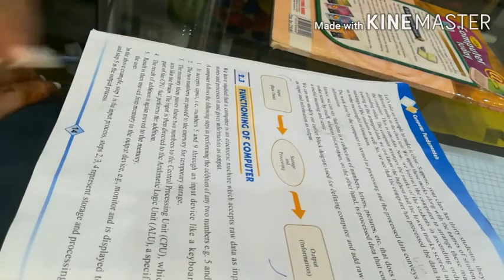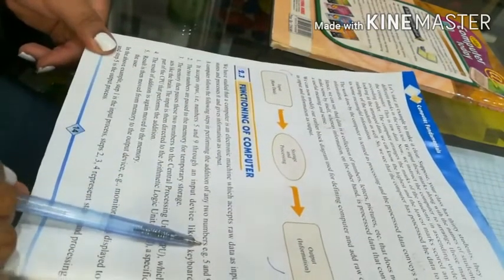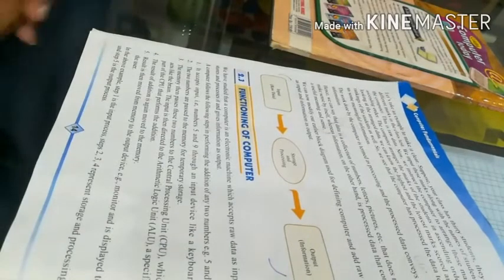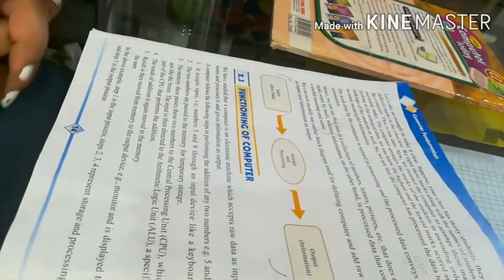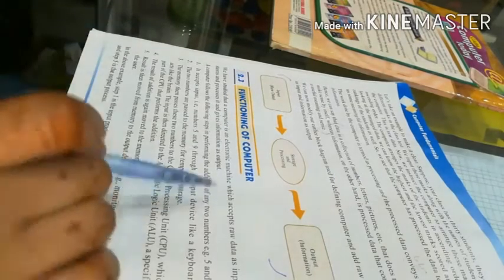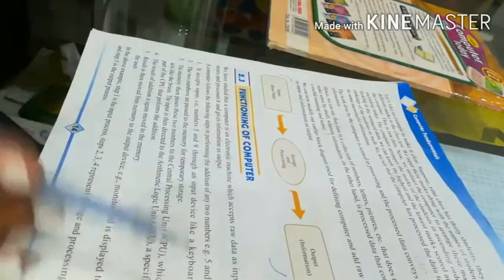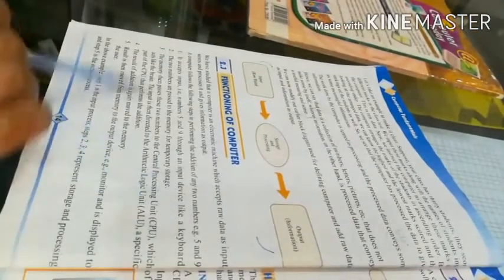Computer follows the following steps in performing the addition of any two numbers. We will take an addition question as an example. For example, 5 and 9. We have to add it.